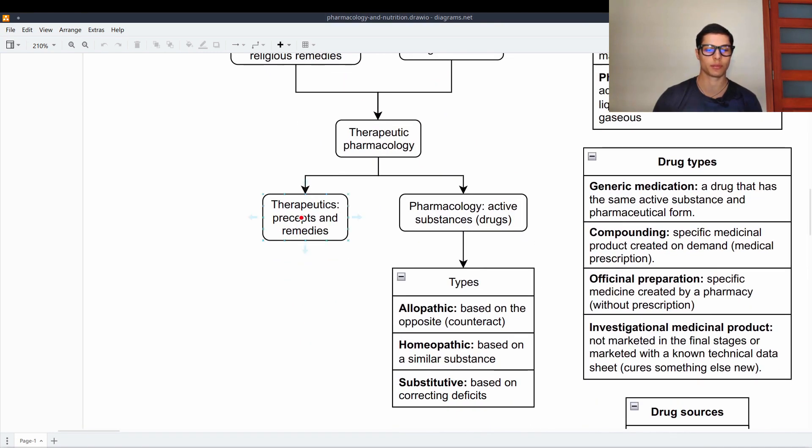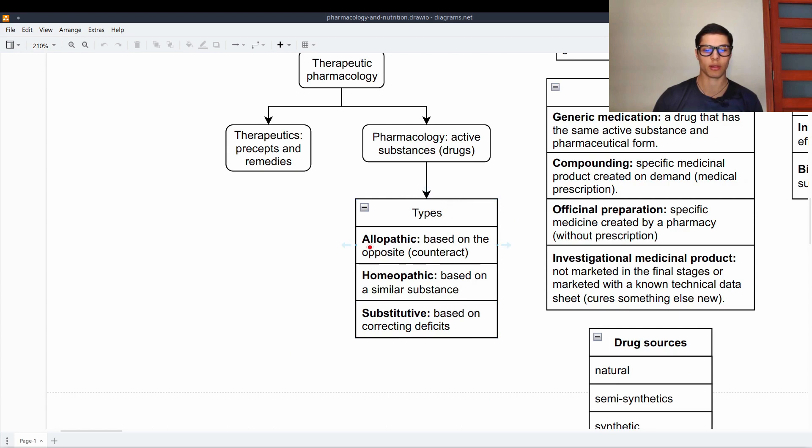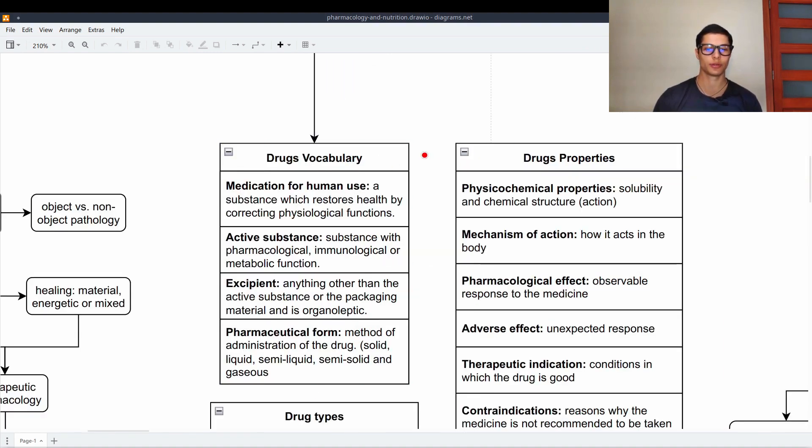Therapeutics comes from precepts and remedies and the pharmacology active substances such as drugs. There are three types mainly. There are allopathic drugs that are based on the opposite to counteract the disease. The homeopathic which are based on the similar substance and also substitutive. This is based on correcting deficits.